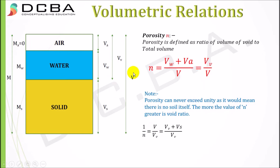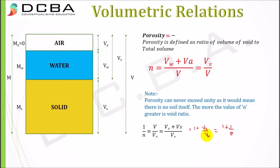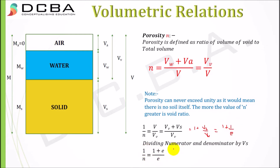Now, 1/n = V/Vv = (Vs + Vv)/Vv = 1 + Vs/Vv = 1 + 1/e, because void ratio e = Vv/Vs, so Vs/Vv = 1/e. Simplifying: 1/n = (1 + e)/e, which gives us the important relation n = e/(1 + e).